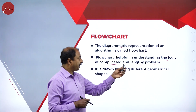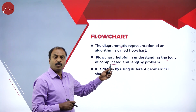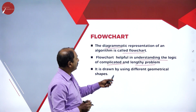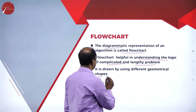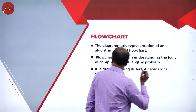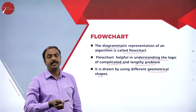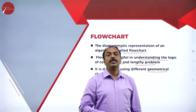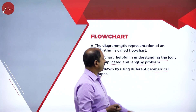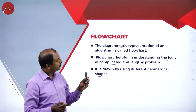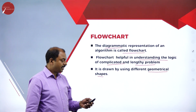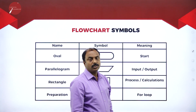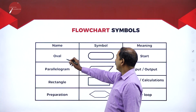Because flowchart is diagrammatic, it conveys more meaning compared to an algorithm. It is drawn using different geometrical shapes. As we have seen in the definition, it is a diagrammatic representation — so how do we draw a flowchart? By using different geometrical shapes. Now let us see the different shapes used in a flowchart.